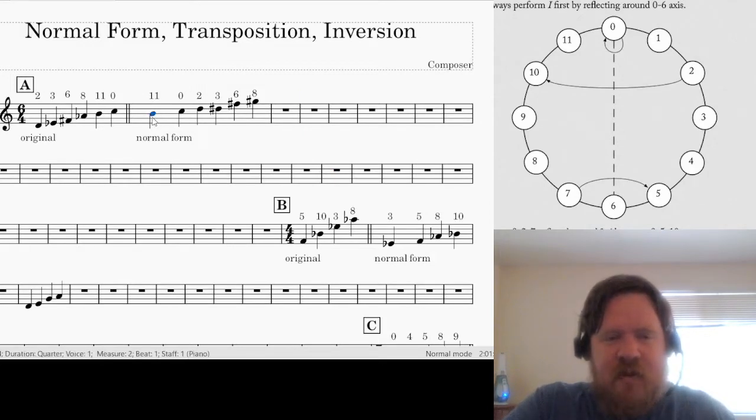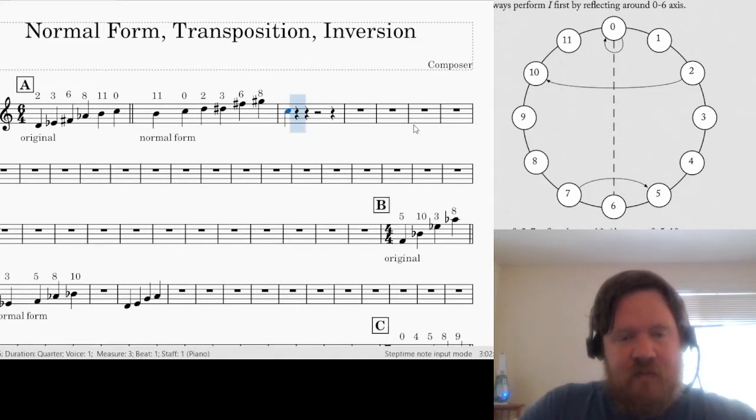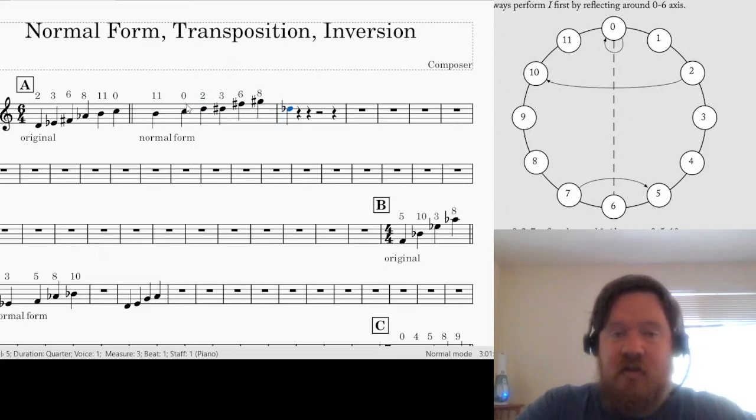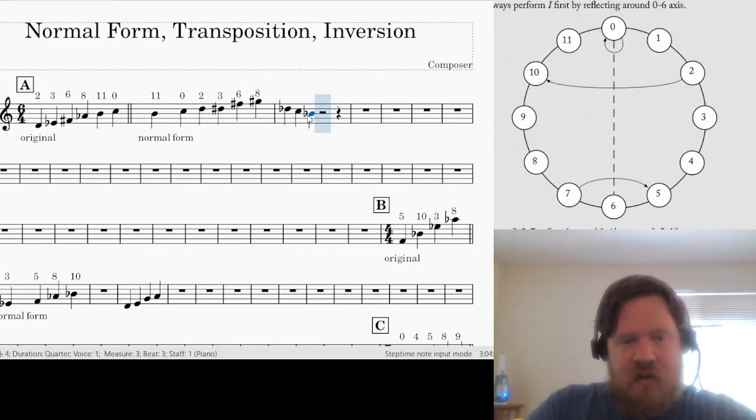If we start here with 11, we're going to invert all of each one of these pitches individually. So 11, over on our clock face, is a half step below C, and it's going to become 1, the note that's a half step above C. I think I'm going to write it as a D-flat. 0 continues to be 0 because it stays right there. 0 is always the same distance away from 0. 2 is going to become 10.